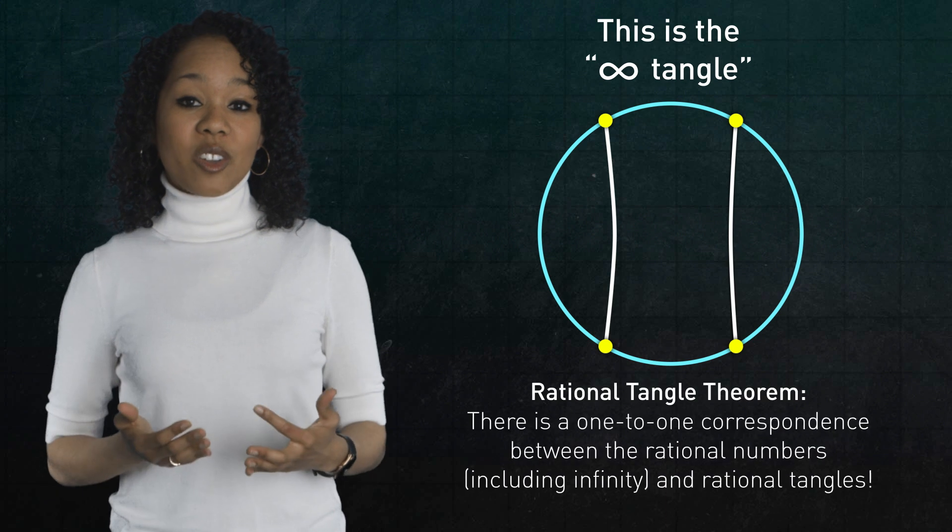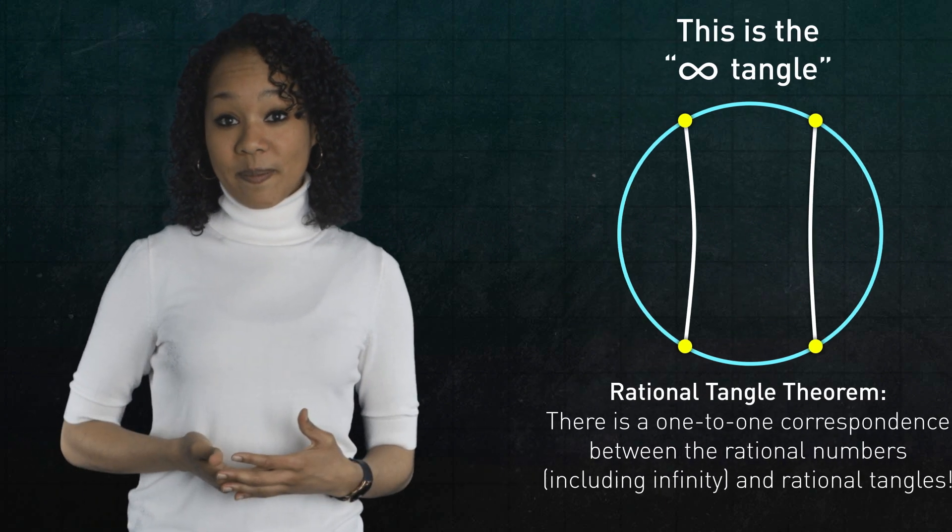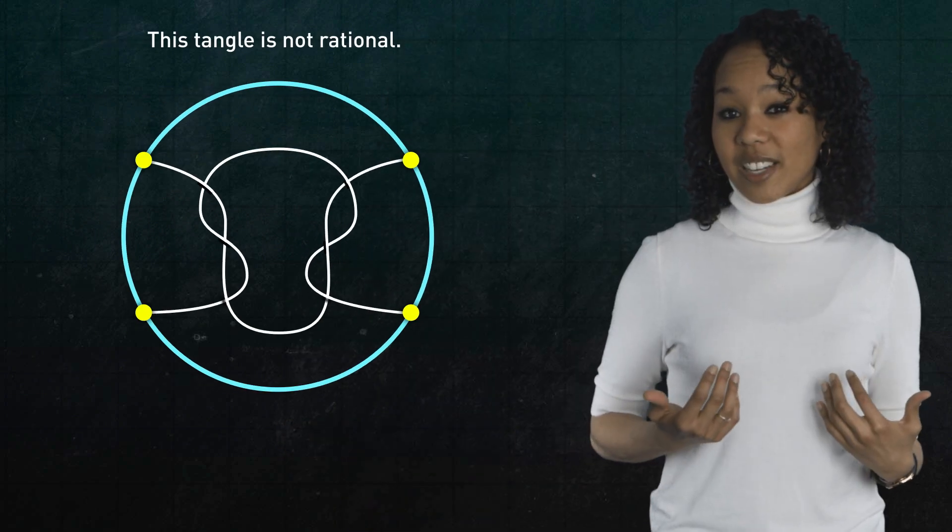And this is called the rational tangle theorem. By the way, not every tangle of two strings is a rational tangle, so an alternating combination of horizontal and vertical twists. For instance, this one is not. Can you figure out why?